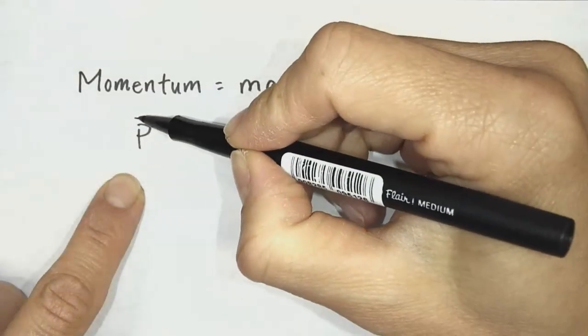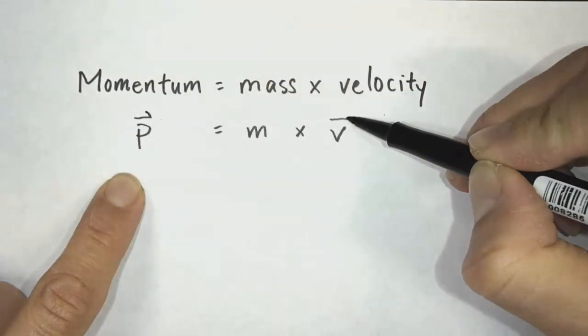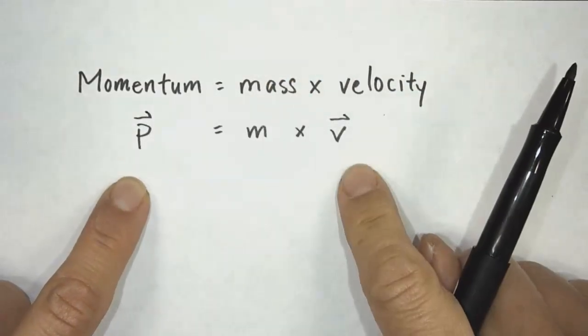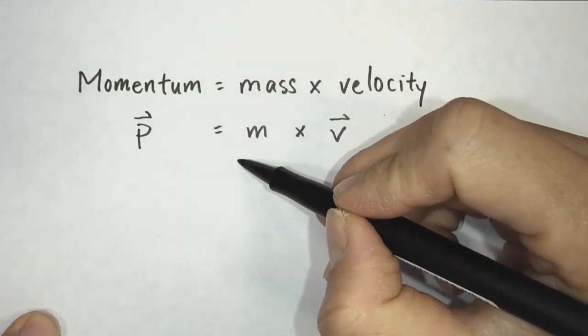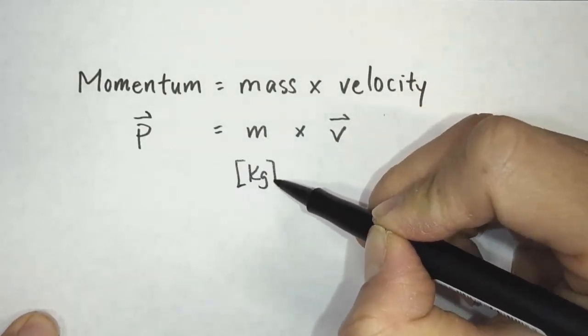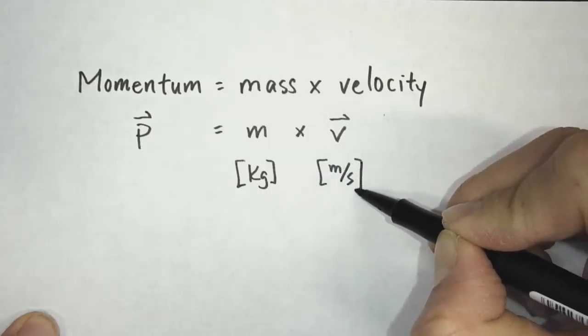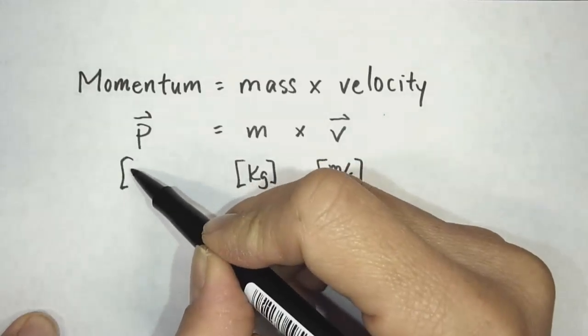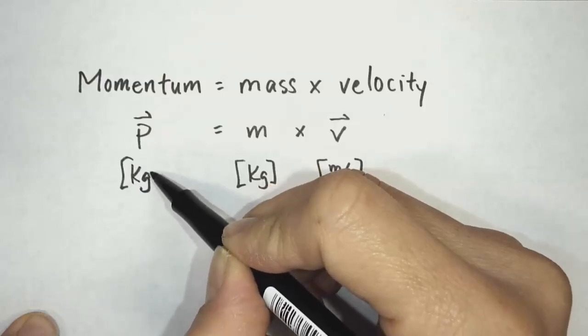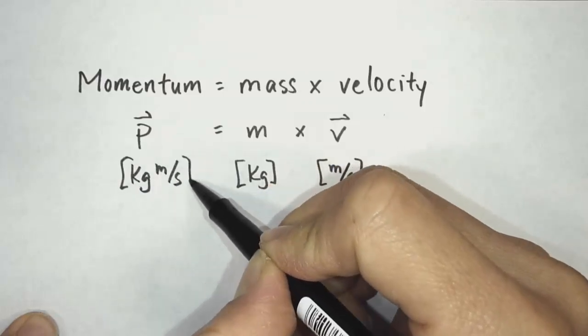We will put an arrow on top of it just to remind us that those are vectors. The units for mass is kilograms. The unit for velocity is meters per second. And if we combine these, we get the unit for momentum, which is kilograms meters per second.